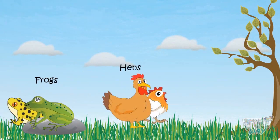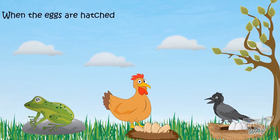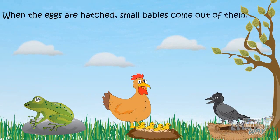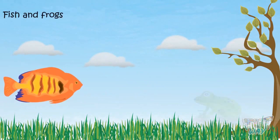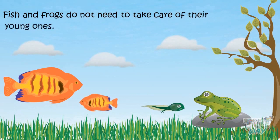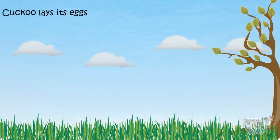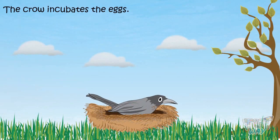So we learned the names of young ones of animals. Some animals like frogs, hens, and crows lay eggs — when the eggs hatch, small babies come out of them. Some animals like fish and frogs do not need to take care of their young ones. There is also an interesting fact about a cuckoo: a cuckoo lays its eggs in a crow's nest, and the crow incubates the eggs.